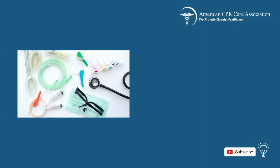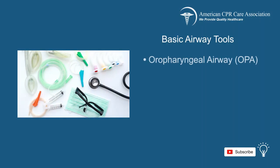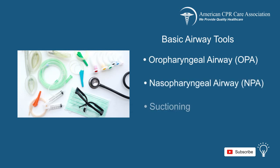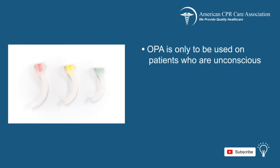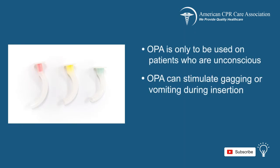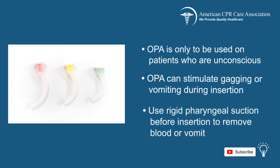As discussed previously, the basic airway tools are OPA, NPA, and suctioning. Remember to only use the Oropharyngeal Airway, or OPA, on patients who are unconscious, as the OPA can stimulate gagging or vomiting. Before inserting an OPA on a patient, first ensure that there is no blood or vomit in the pharynx by using the rigid pharyngeal suction.